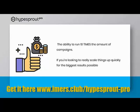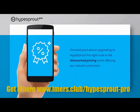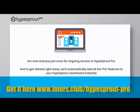The best part about upgrading to Hype Sprout Pro right now is the discounted price we're offering to our valued customers. When you click the button below, you'll be able to lock in a special, limited-time discount and get instant access to all the Pro features for a low one-time investment. Very soon the price will increase and we will very likely start charging a recurring fee. Act now and pay just once for this ongoing access, and we'll automatically add all the Pro features to your Hype Sprout dashboard instantly when you upgrade — no additional action required from you.